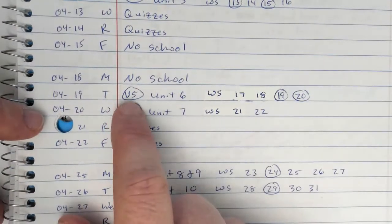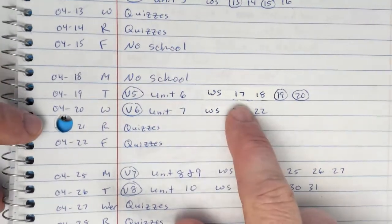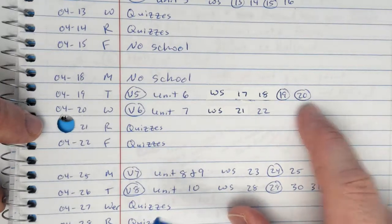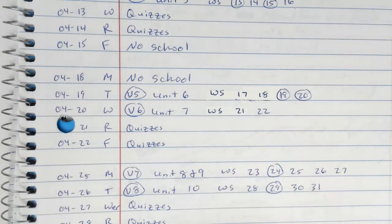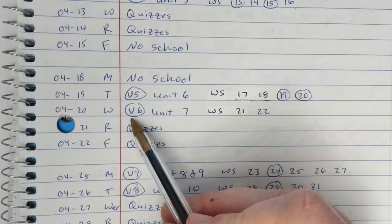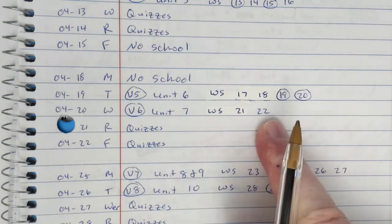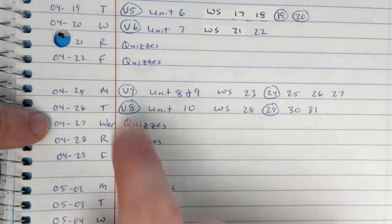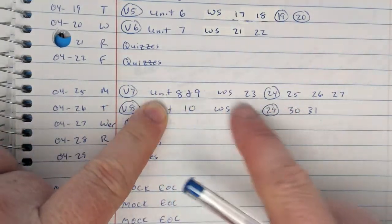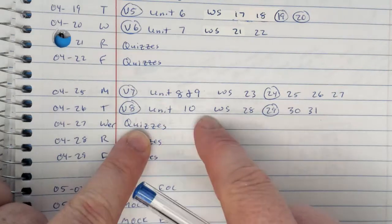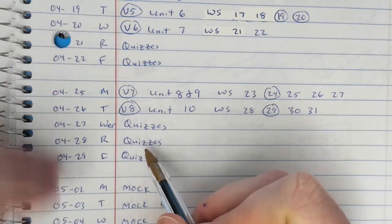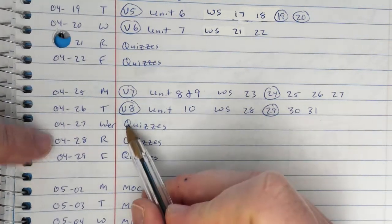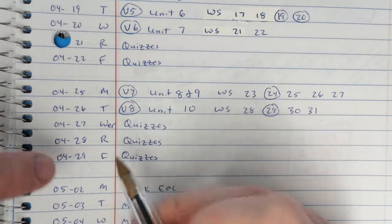Friday and Monday, there's no school. The following week, video five, which is on unit six, which are these pages. Remember, the circled worksheets are not as important, but you should definitely still do them. Then video six was on unit seven, which are these two worksheets. And then you have the quizzes. And then week four, unit eight and nine video with these worksheets, then unit 10, which are these worksheets. And now we actually have a full week for the first time. Quizzes are Wednesday, Thursday and Friday.